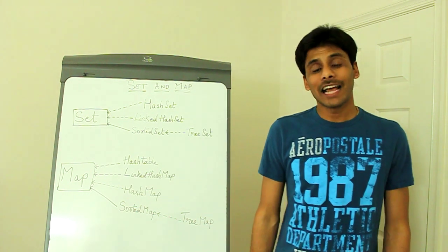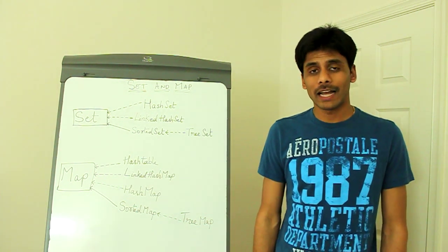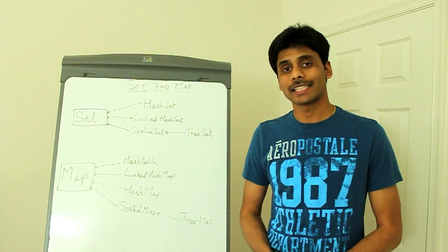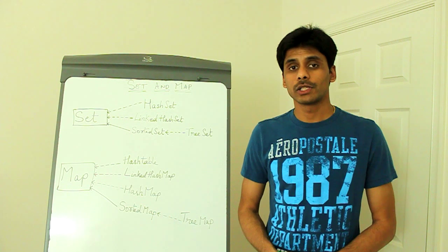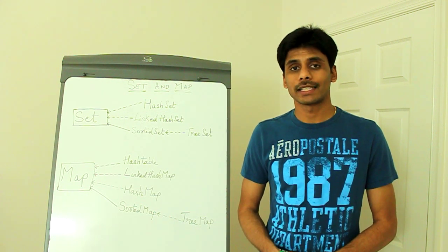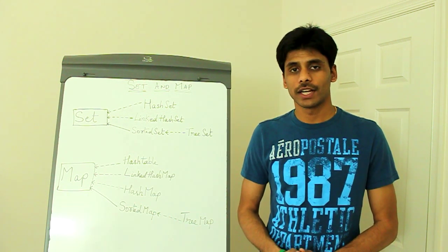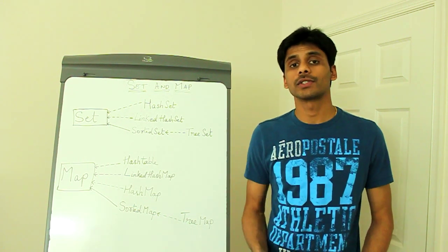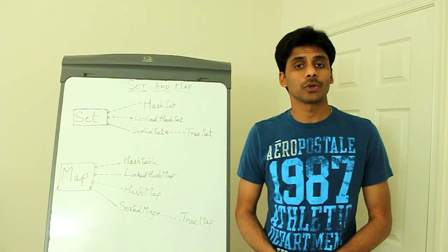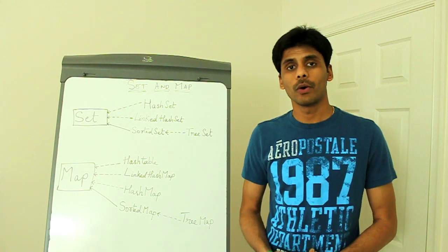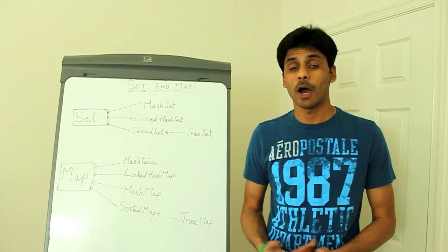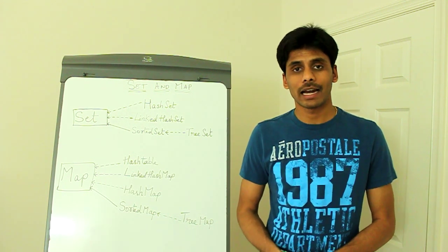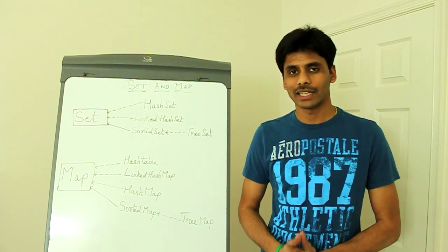Namaste. In the last three sessions on the Java Collections API, you have learned the various interfaces and classes that make up the Java Collections API. You also know the important classes under the List interface and when to use which. In the last session you saw the equals and hashCode methods, when to override them and how to override them, which every Java class inherits from the java.lang.Object class.